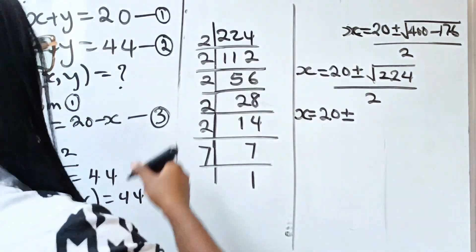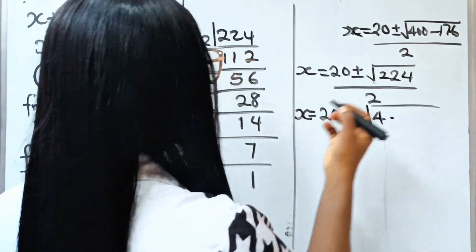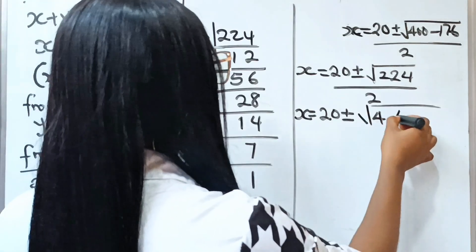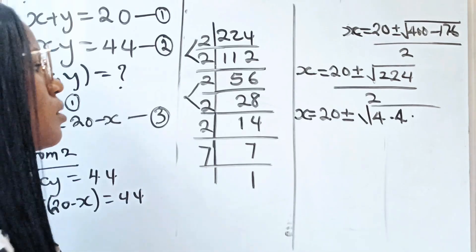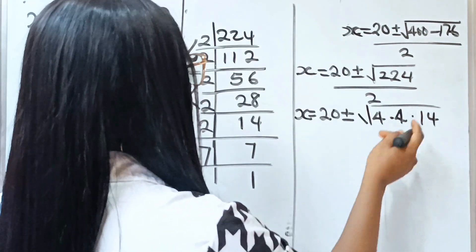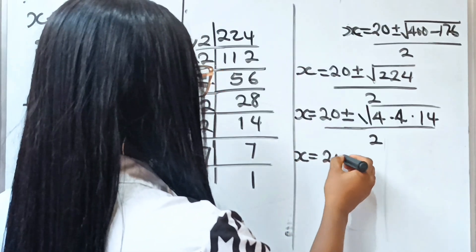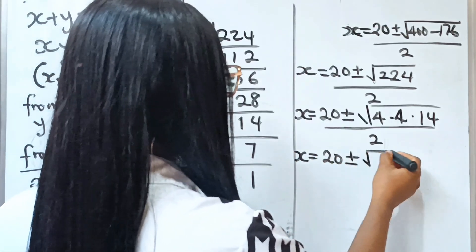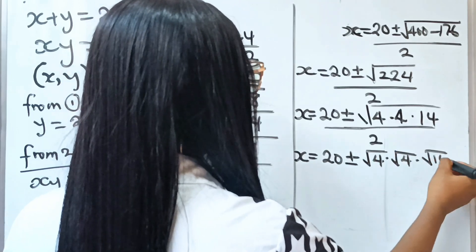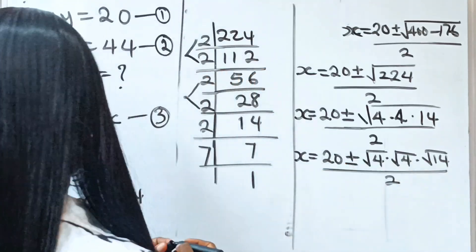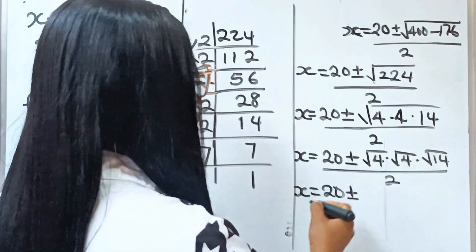So we are going to have 2 times 2 times 2 gives 4, so this will be the square root of 4 multiplied by — another 2 times 2 gives 4 — multiplied by 2 times 7 is 14. So we write the square root of 4 times the square root of 4 times the square root of 14, divided by 2.